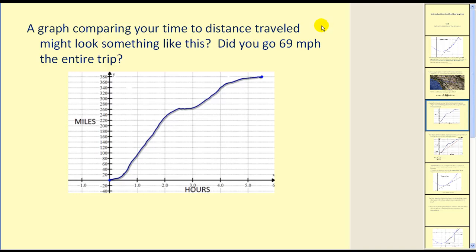Did you go 69 miles per hour the entire trip? We can see from this graph that we didn't. Looking at the start of your trip, you can see that the change in miles with respect to time is not as large in this region as it is in this region. This may represent when you leave your home traveling to the freeway, then as you enter the freeway, your rate of change will increase. This middle interval here, we can see that time is passing but distance is not changing. This may represent a time where you stop for gas or lunch or something.